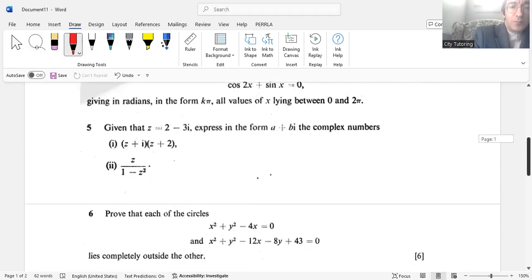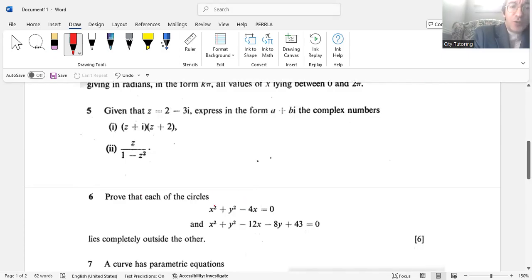Question number six: prove that each of the circles X² + Y² - 4X = 0 and X² + Y² - 12X - 8Y + 43 = 0 lies completely outside the other. This was generally well done using the coordinates of the centers and the sum of the radii. Those who adopted a purely algebraic approach where they solved the two equations were all unsuccessful, actually, as the non-existence of real intersections is only a necessary but not sufficient condition for one circle to lie completely outside the other. I've got mixed feelings about this one.